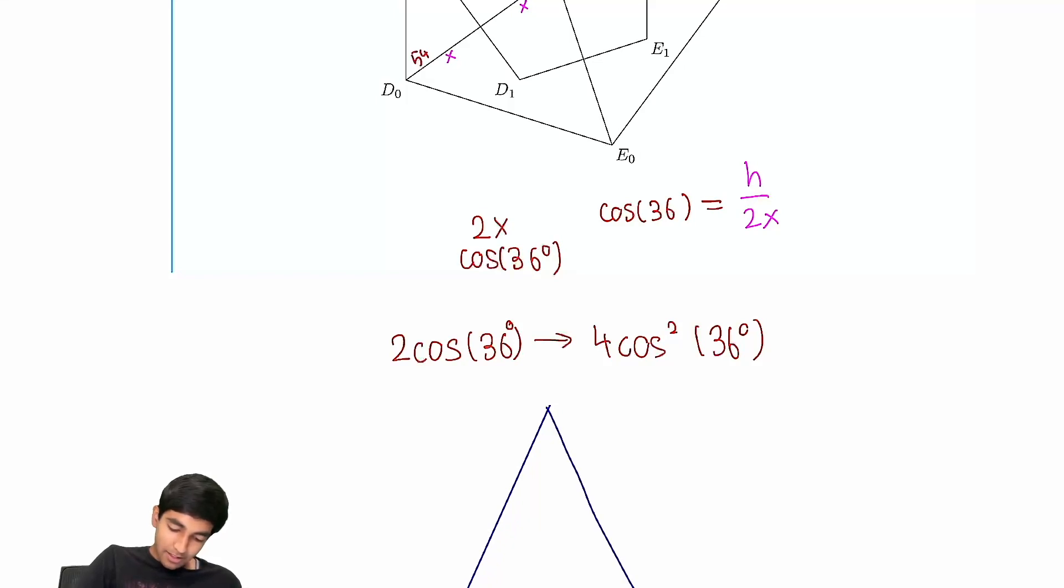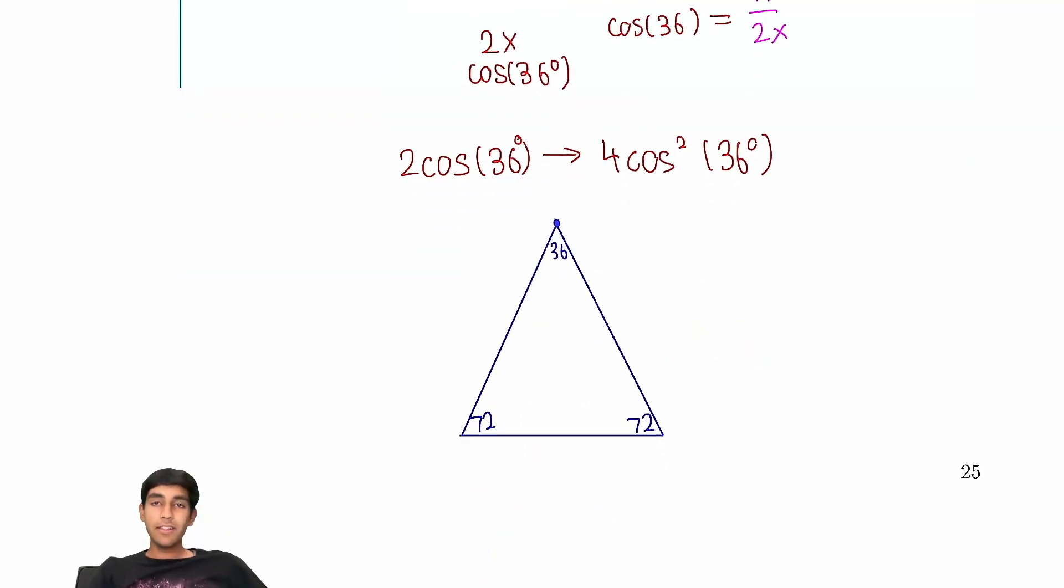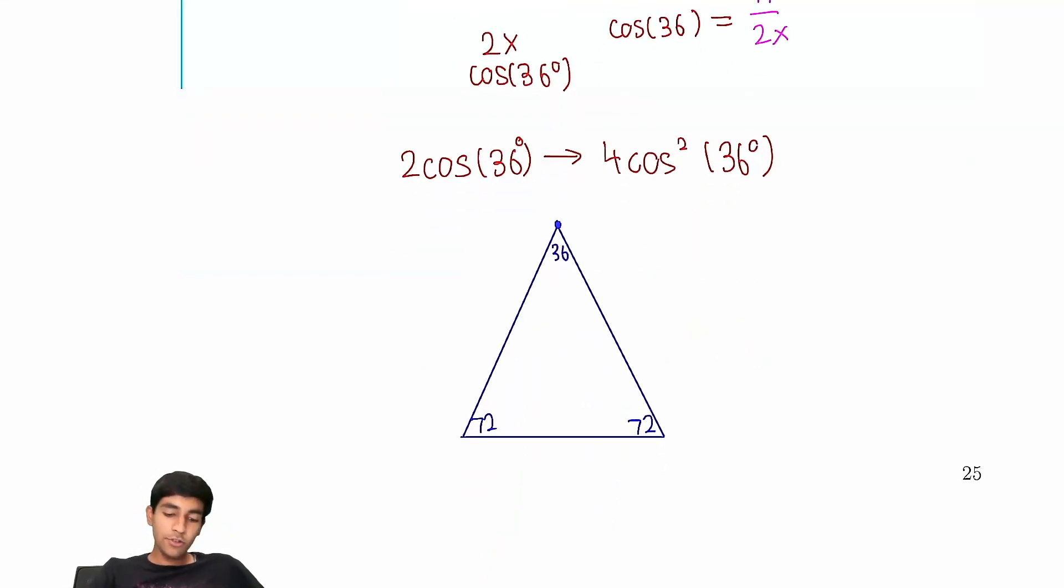So we have this triangle, 36, 72, 72. So there's this really cool, and how do you motivate this? It's really not easy. This is something you just have seen before, or you haven't seen before. But this is a really cool trick, and it's how you can derive the value of cosine of 36. I would derive it.